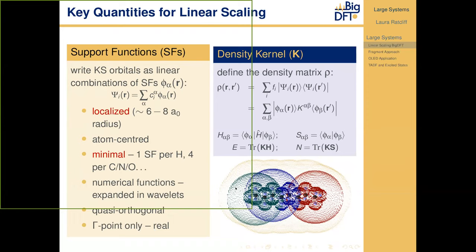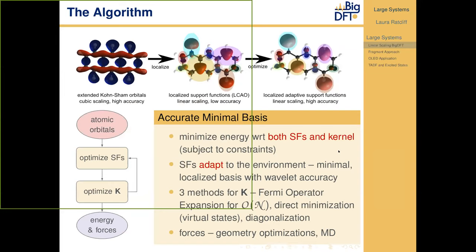Instead of using delocalized functions, we have localized atom-centered quantities. We still have our two levels of wavelet underlying grid resolution, but we now also have these spherical regions imposed on top. These support functions, although they tend to be spd-like and resemble atomic orbitals, are in fact purely numerical functions, and usually we make the choice that they are quasi-orthogonal. Once we have these support functions, we write the density matrix in terms of the support functions and density kernel, and from then on we work in terms of matrix operations.